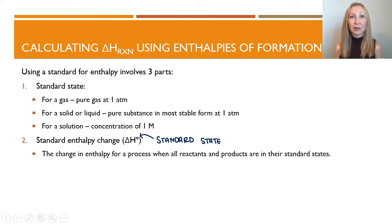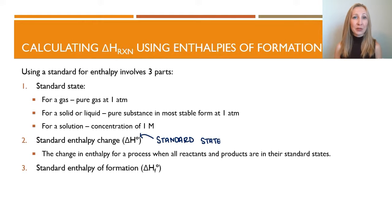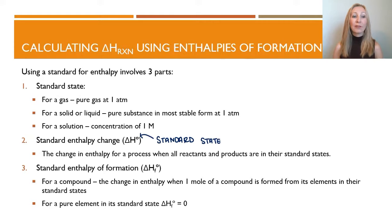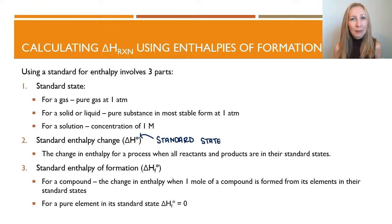To figure out the standard heat of a reaction, we can use a list of values known as the heat of formation — the standard heats of formation for a compound. This is the change in enthalpy when one mole of the compound is formed from its individual elements in their standard states. For a pure element, the standard heat of formation is zero. This is our baseline — the element is already there in its standard state.